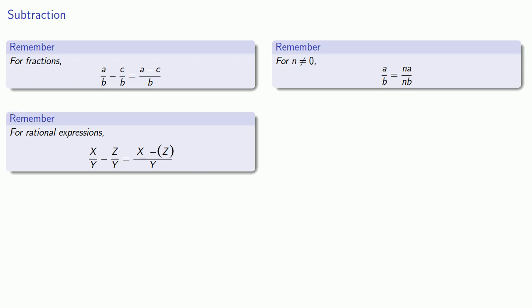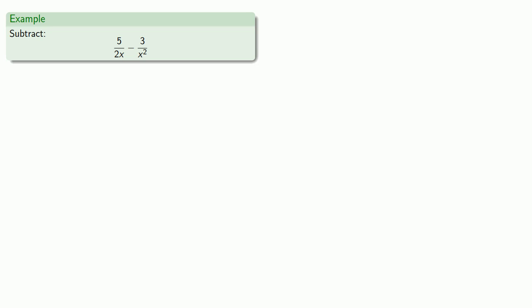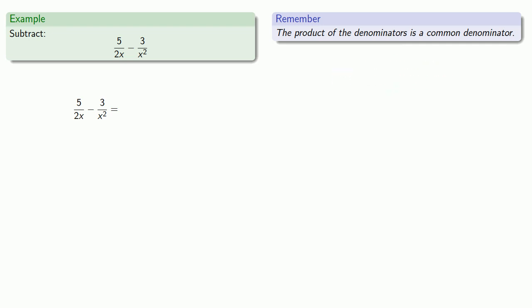And again, if our denominators aren't the same, we could multiply numerator and denominator by some factor to change the denominator. For example, if we want to subtract 5 over 2x minus 3 over x squared, as with fractions, we have to get a common denominator. The product of the denominators is always a common denominator. So our rational expressions are 5 over 2x and 3 over x squared, and a common denominator is going to be 2x times x squared.